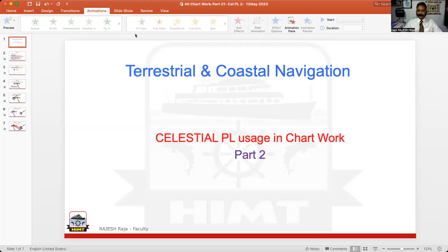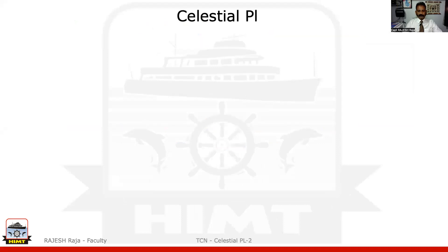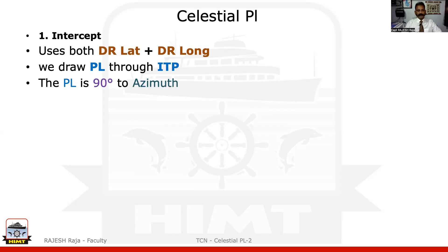Let us start off the second and last part of celestial PL — I call it Part Two. We remember last time we did what intercept was. There are three main types of observations which we take sight and use for calculation in celestial objects. The first one was intercept. As a quick recap, we used both DR lat and DR long when we want to plot for intercept. By calculation, we used to find the intercept, which is a small value slightly away from the DR — it can be either towards or away from your GP. I marked that point as your ITP, and we used to draw a PL at right angles to the azimuth through this ITP.